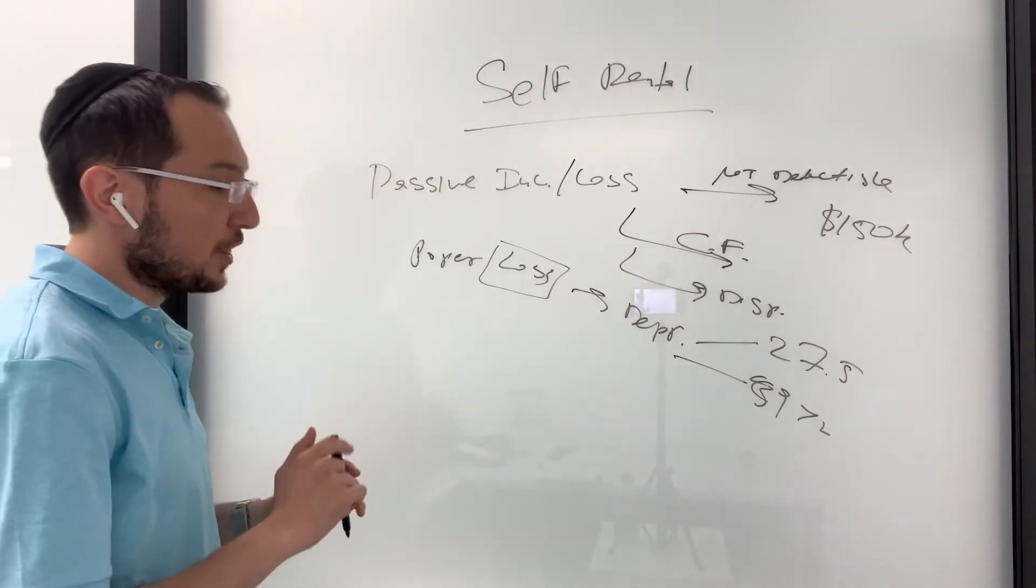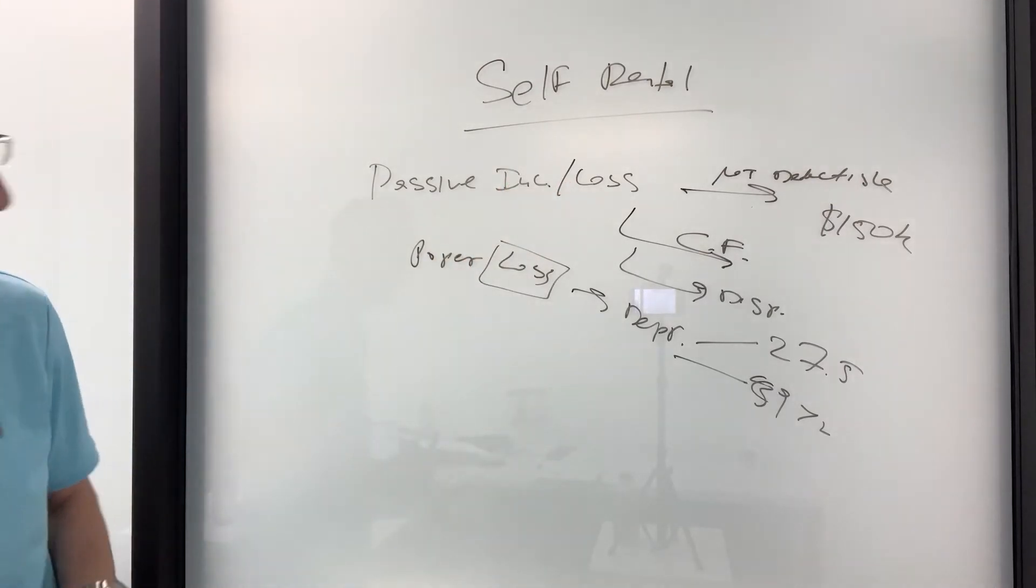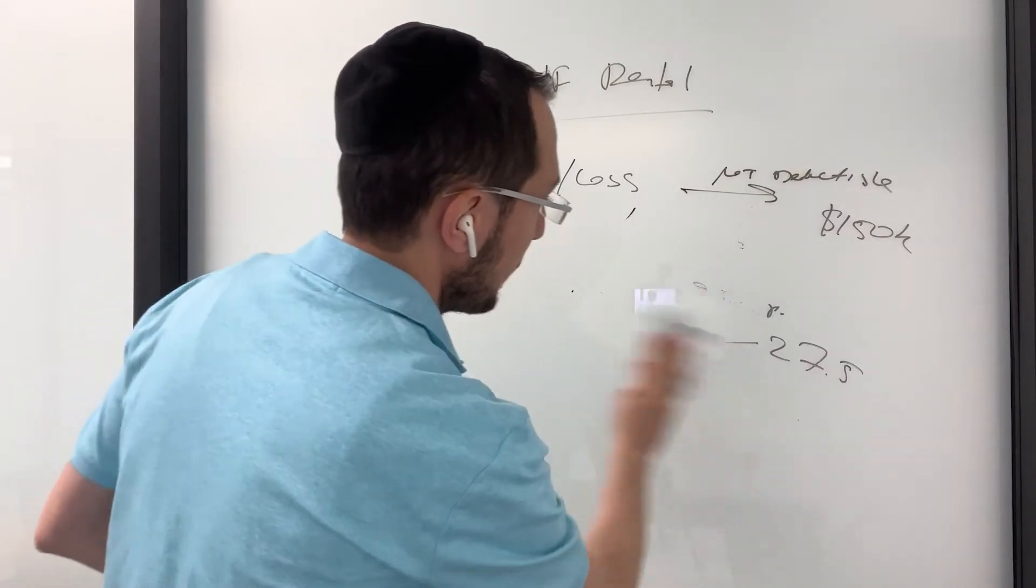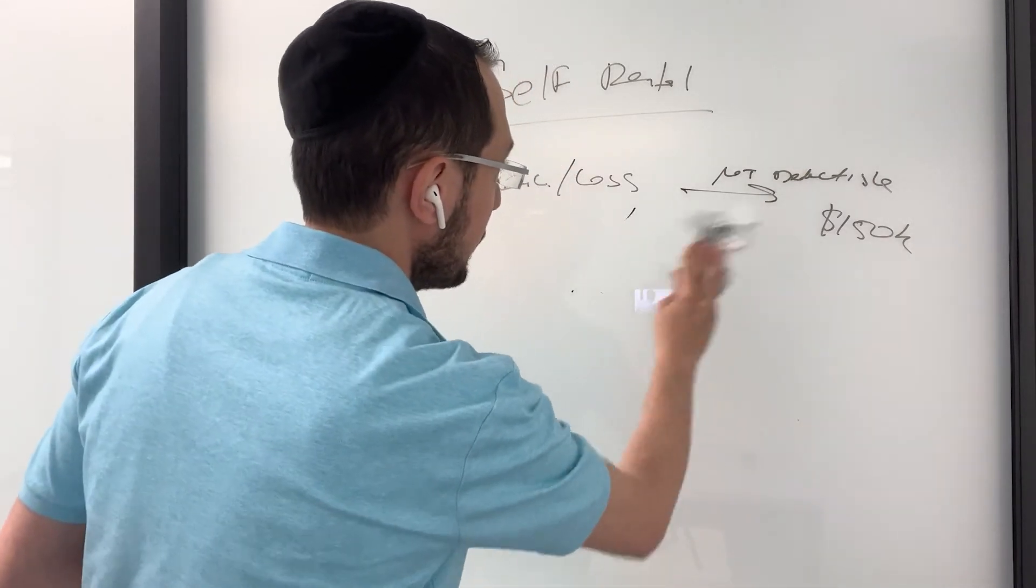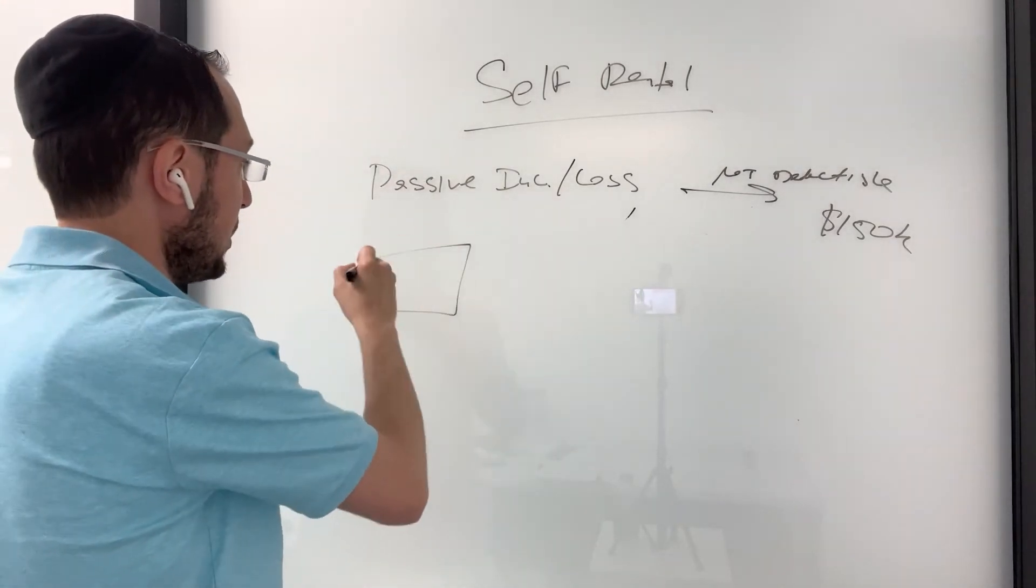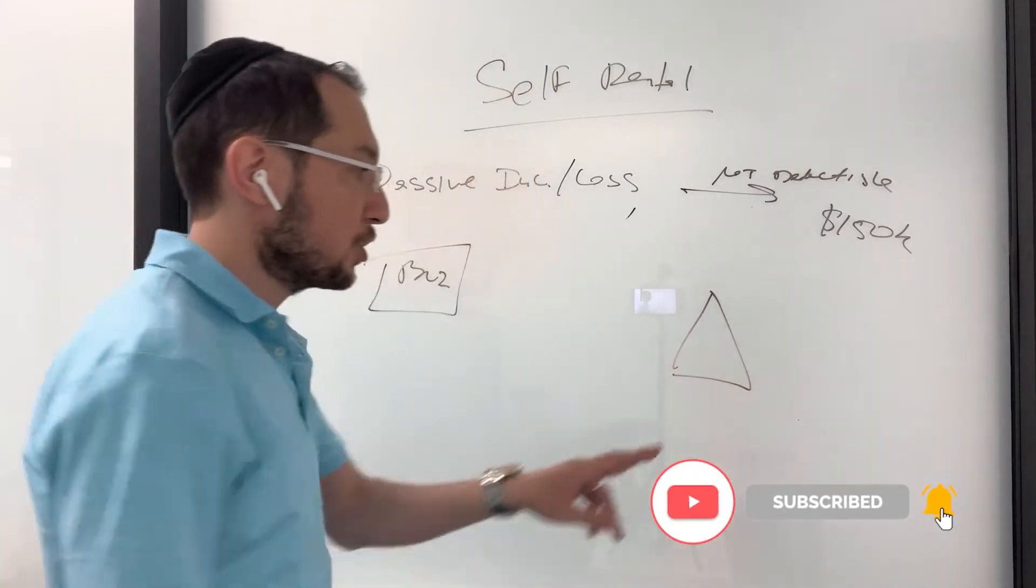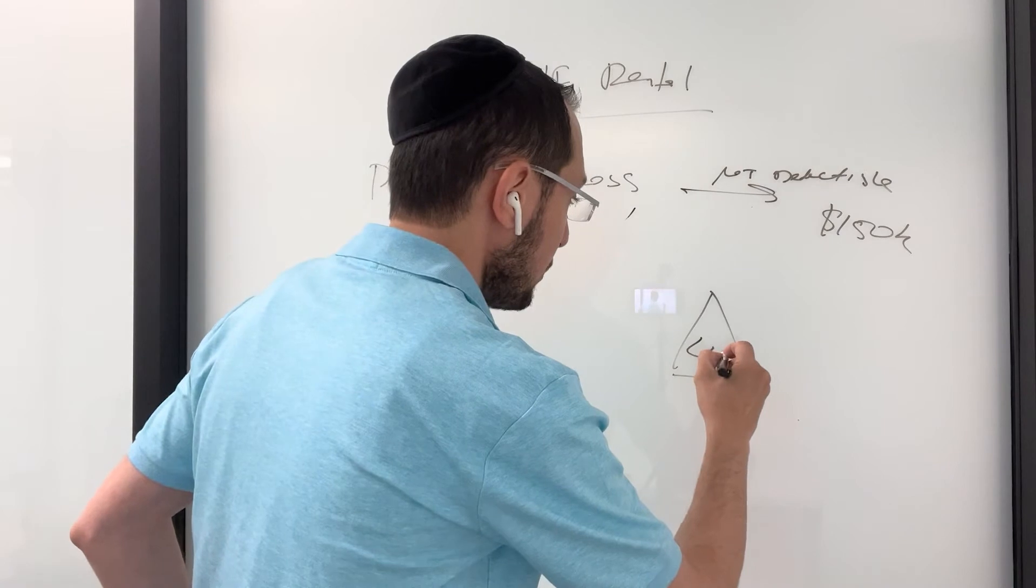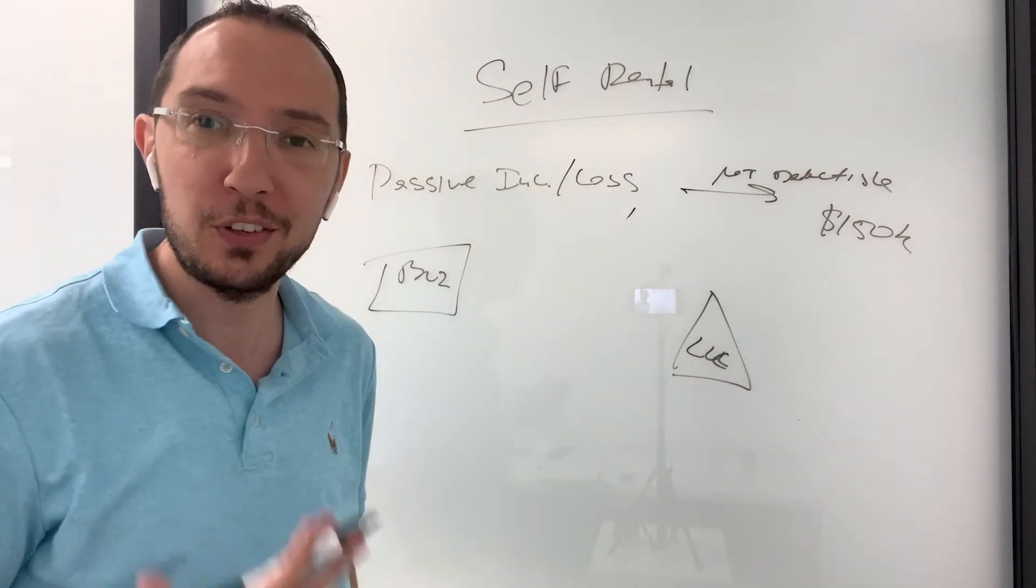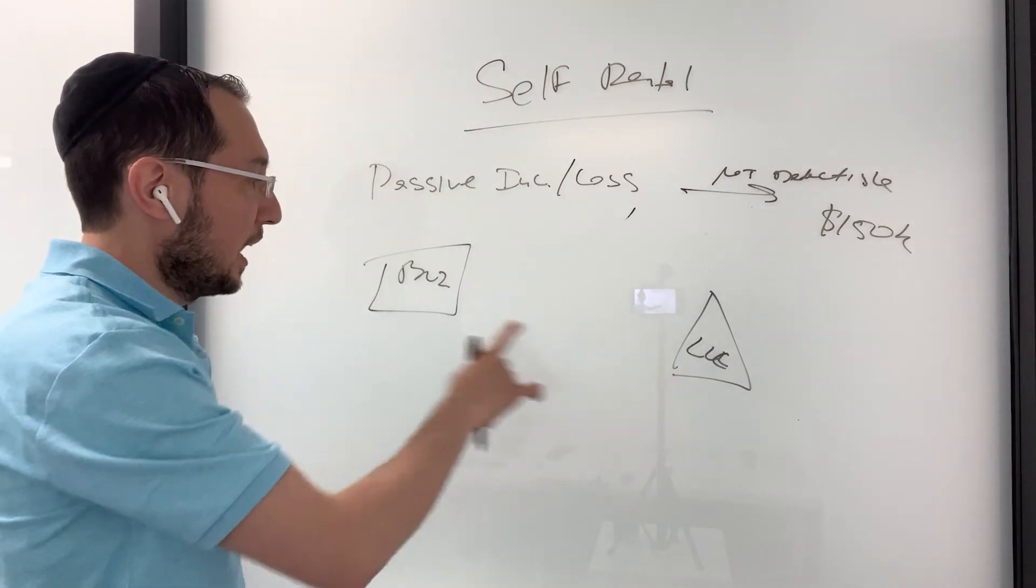These rules are different when you are self-renting to yourself. So how does this work? We've got a business and we're going to put the business in a square right here. And we've got rental real estate, which assuming it is an LLC. General recommendation is that you should have real estate in a separate entity.